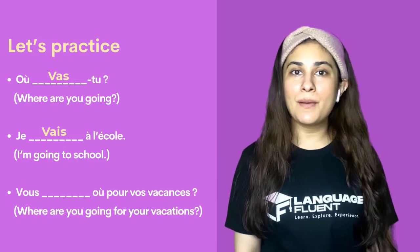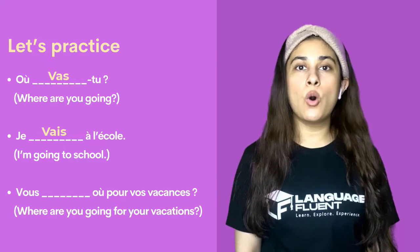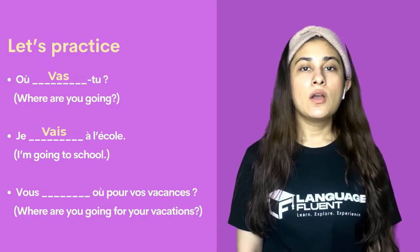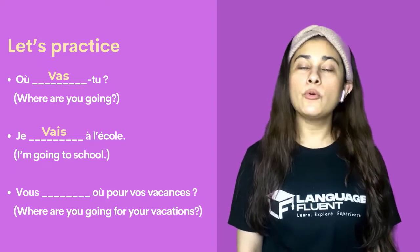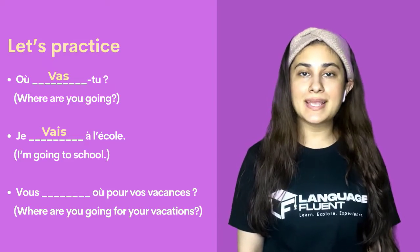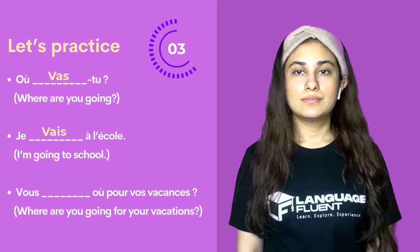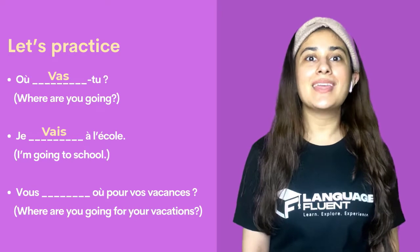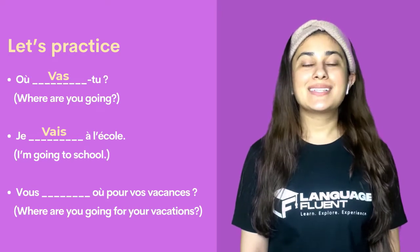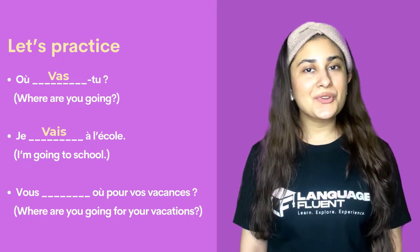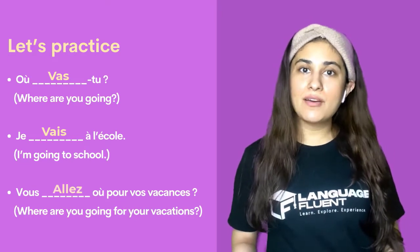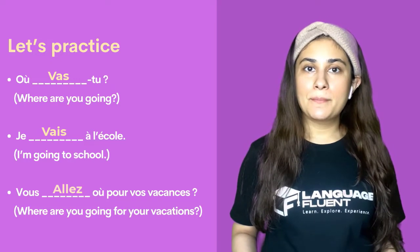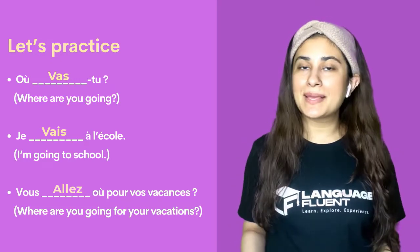And the third one: Vous ___ où pour les vacances? As we can see, we have the subject vous. The conjugation would be allez. So we have: Vous allez où pour les vacances?